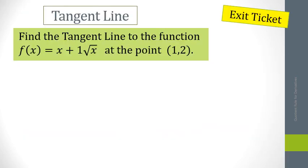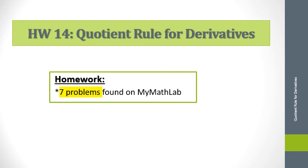For this exit ticket — I believe it's number 11 in Blackboard — you're going to do the same type of problem as the last example except you don't have to use the quotient rule; it's a straight derivative. I would simplify this one first, which will help you. Good luck, and when you're finished, upload it to Blackboard. Your homework is seven problems on MyMathLab — Homework 14, the quotient rule for derivatives. Be careful with your simplification, and let me know if you have any issues.